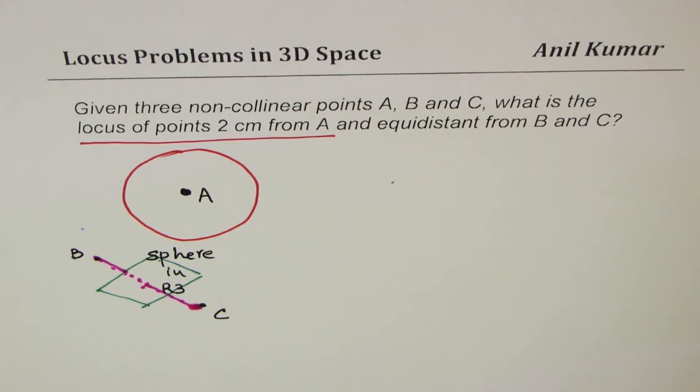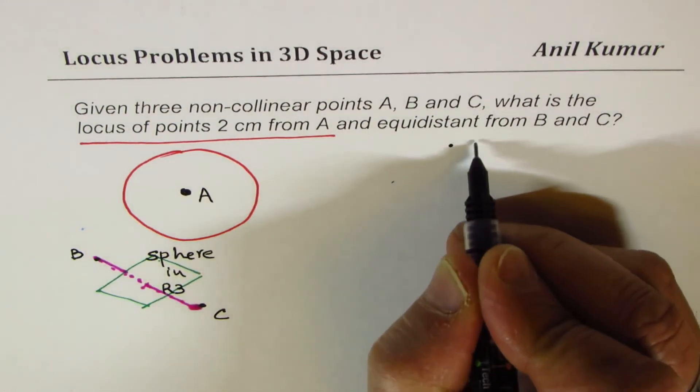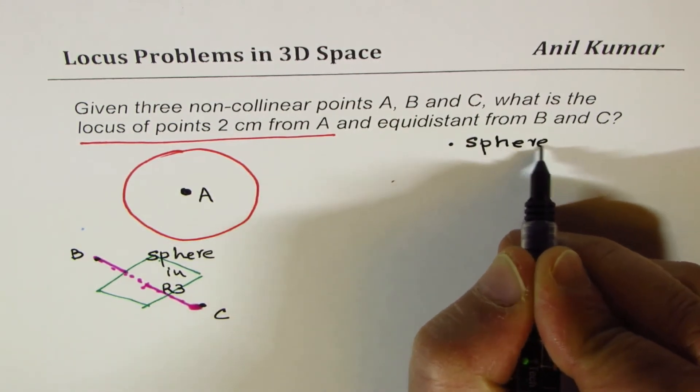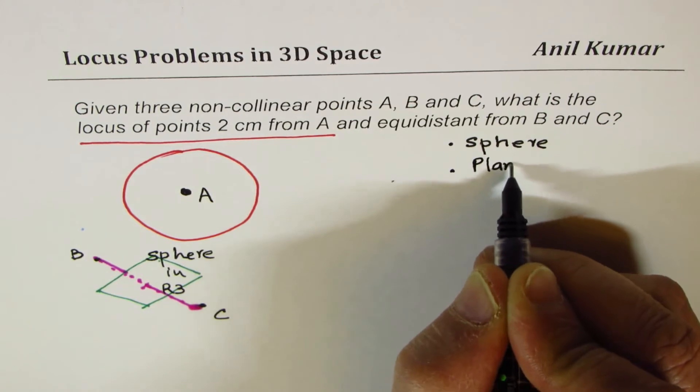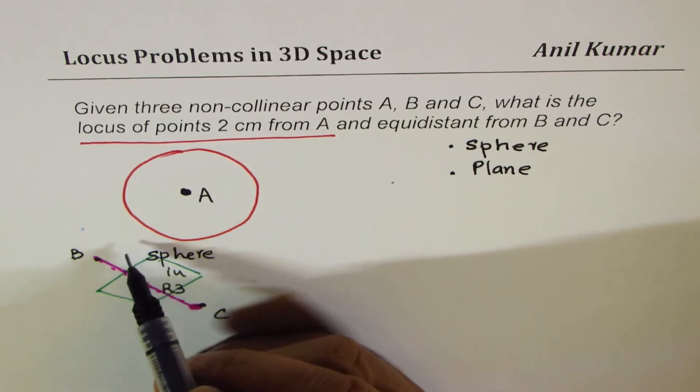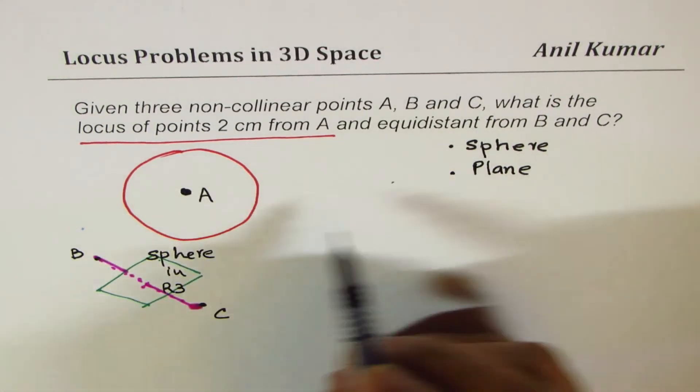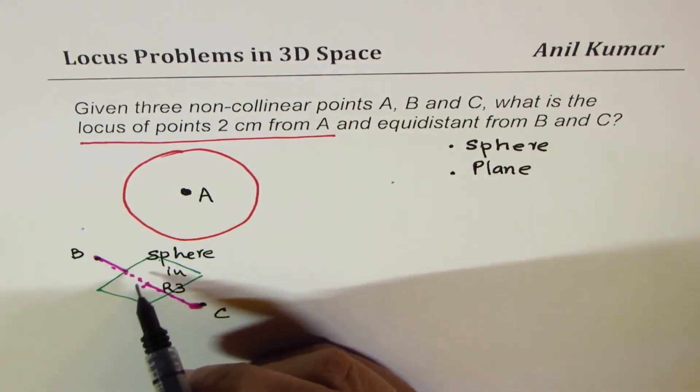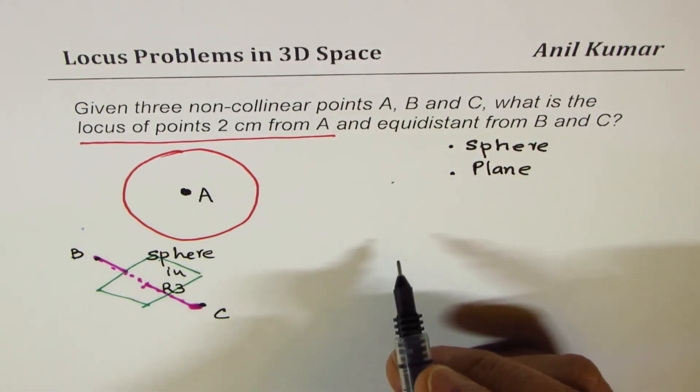Now, the intersection could be, there could be many different situations here. So, now we are talking about intersection of a sphere with a plane. So, what are the possibilities? One is that it could go through the sphere, right?